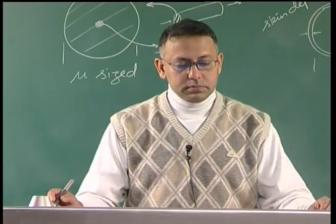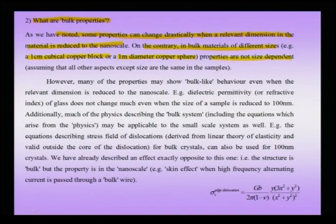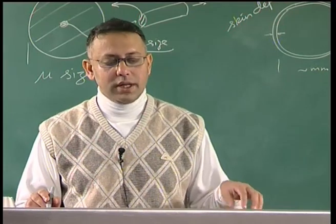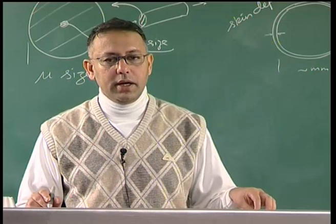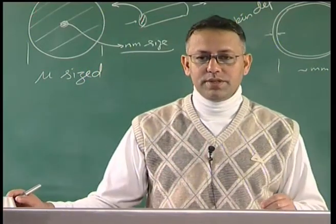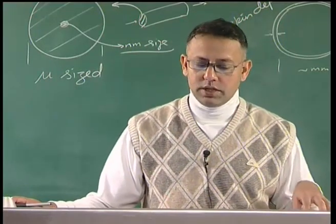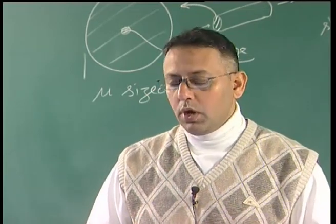As noted, some properties can change drastically when a relevant dimension in the material is reduced to the nano scale. On the contrary, bulk materials of different sizes — for instance a centimeter-cube copper block or a 1 meter copper sphere — have properties which are not size-dependent. A bulk material is one whose properties are not going to change with size; measuring the yield strength of a 1-centimeter versus a 1-meter copper specimen should give very similar values.